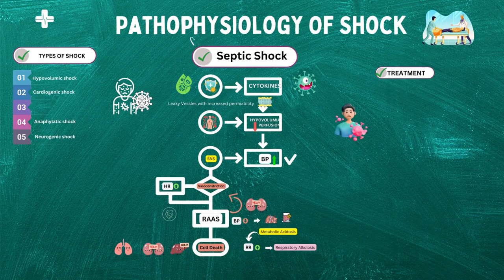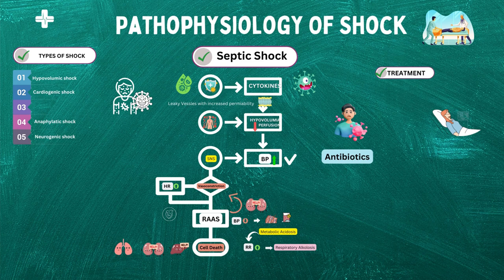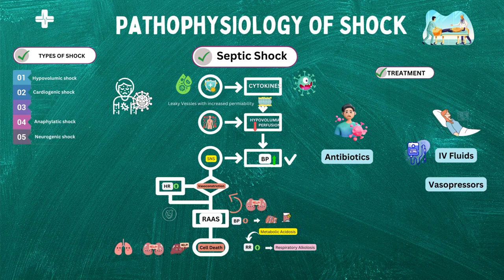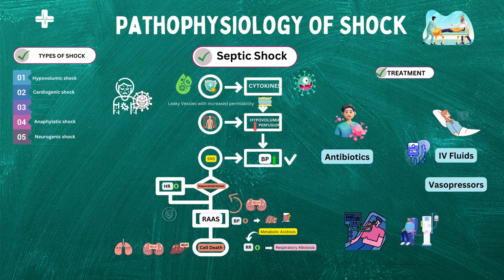Treatment for septic shock involves identifying and treating the underlying infection, as well as providing supportive care to maintain blood pressure and tissue perfusion. Antibiotics are often used to treat the infection, and fluid resuscitation may be necessary to maintain adequate blood pressure and tissue perfusion. Vasopressors, such as norepinephrine or dopamine, may be used to increase blood pressure and improve tissue perfusion. Additionally, organ support may be necessary, such as mechanical ventilation for respiratory failure, dialysis for kidney failure, or liver support for liver failure. In severe cases, extracorporeal membrane oxygenation (ECMO) or other forms of mechanical circulatory support may be necessary to support the failing organs.